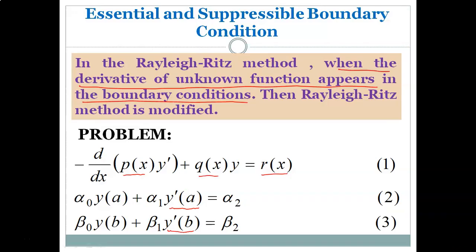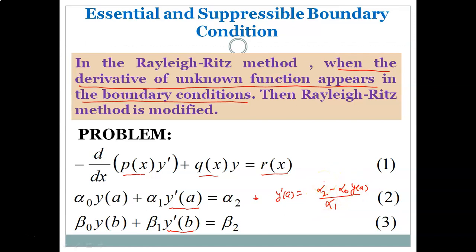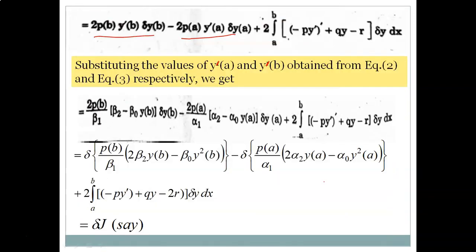From equation 2 we get y'(a) = (α₂ - α₀·y(a)) / α₁, and similarly from equation 3 we get y'(b). These values are substituted back into the equation, giving us the equation in a modified form.